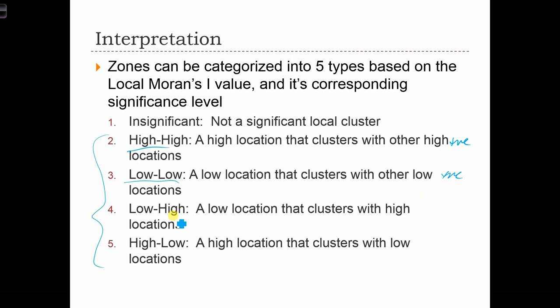Or we can have low-high or high-low cases where a location tends to cluster significantly with opposite types of locations. So low values are clustering with high values, and high values clustering with low values.